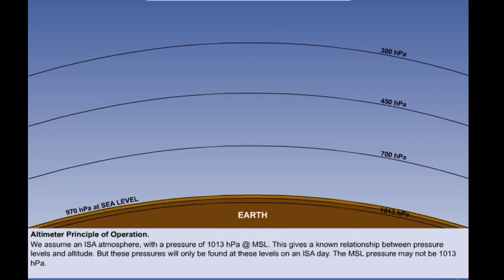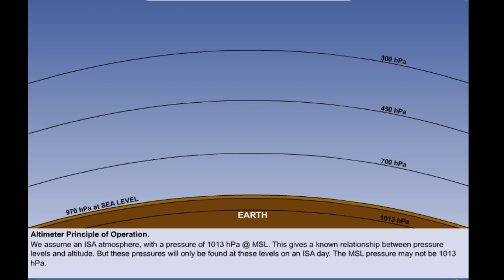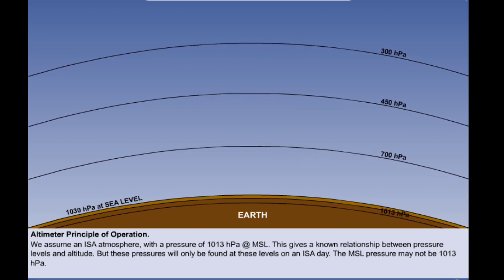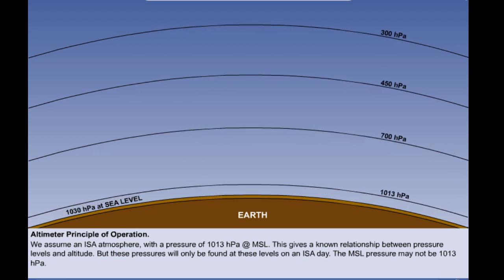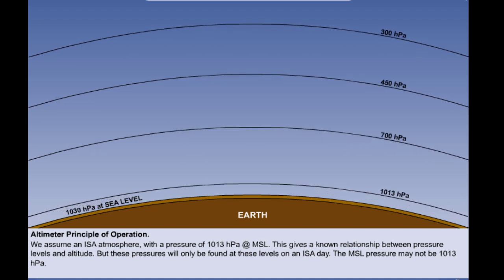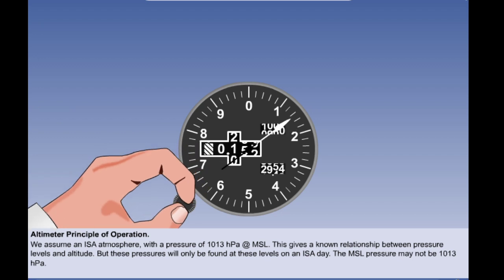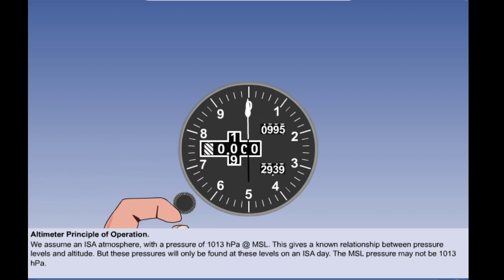So if the sea level pressure were say 970, all the contour lines would move down together. And if it were higher than 1013 they would all move together upwards. We can solve this problem by altering the subscale setting of our altimeter so that the instrument is reset to read zero for the mean sea level pressure at the time. If we fail to do so we have an error which is given the name barometric error.